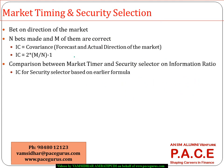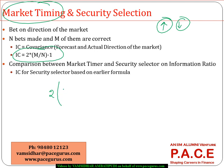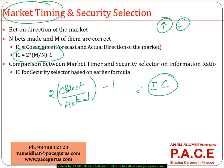Market timers are a different set of people — they don't select securities but instead make bets on market direction, whether the market will go up or down. For market timers, the information coefficient is computed as: IC = 2 × (number of correct predictions / total number of predictions) − 1. After computing the IC this way, the process of finding the IR remains the same: IC times the square root of breadth.